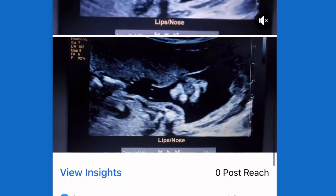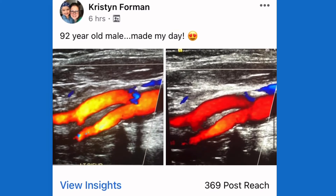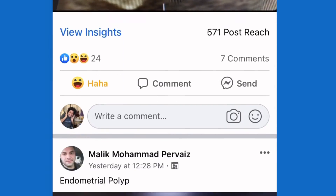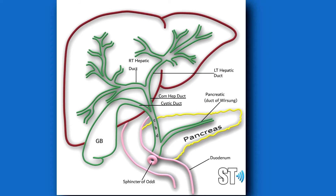The common bile duct is one of those structures that when you have experience finding it, it's super easy. But for those who are starting out or who may be less experienced with it, they might find it a little difficult — kind of like trying to find ovaries. So first, real quick, let's just recap on what the common bile duct is.